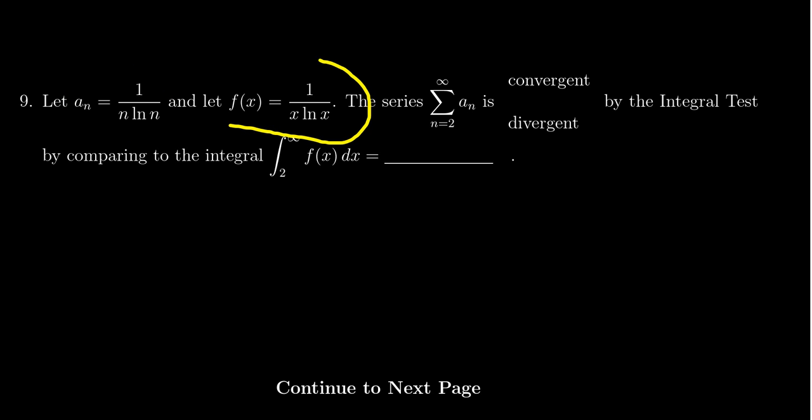We're also given a function f of x, which is equal to 1 over x times the natural log of x. Notice here that f of x is the continuous extension of the sequence a sub n. It's the same formula, just one is a discrete sequence, one is a continuous function.